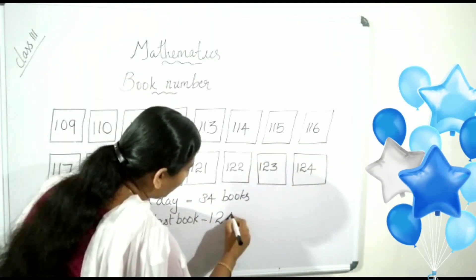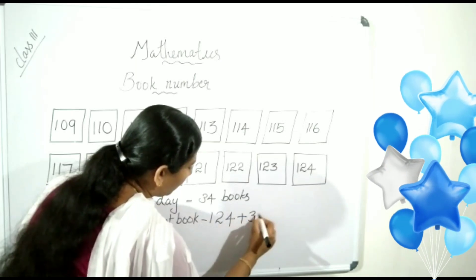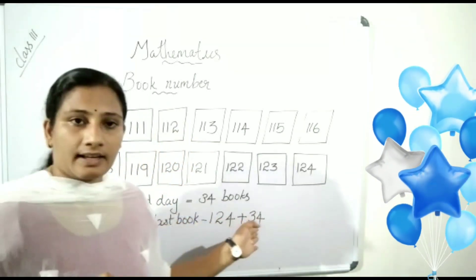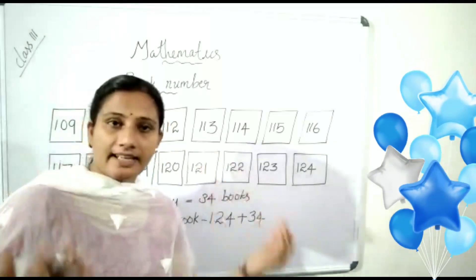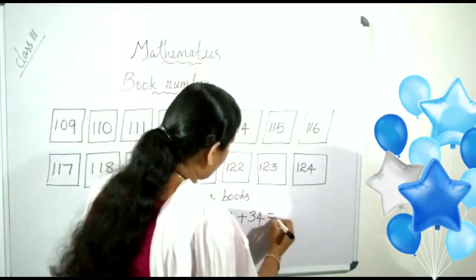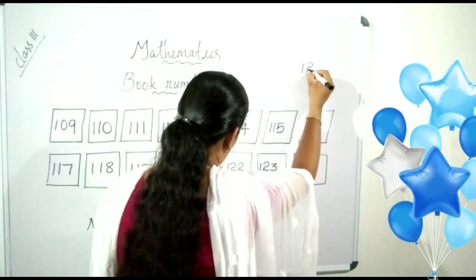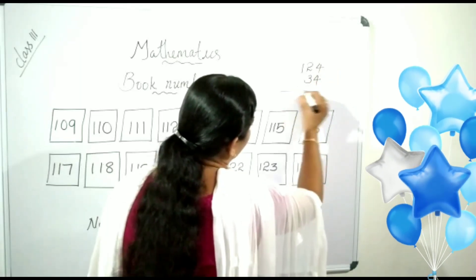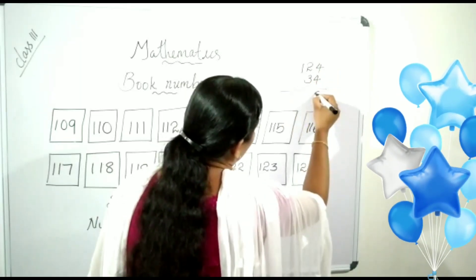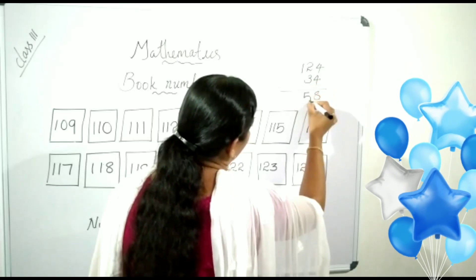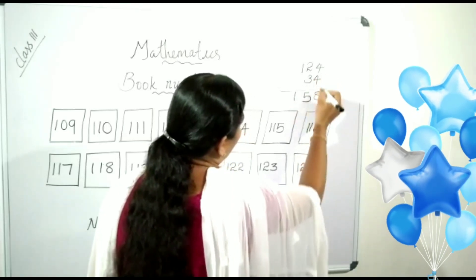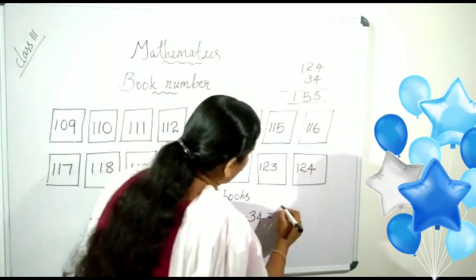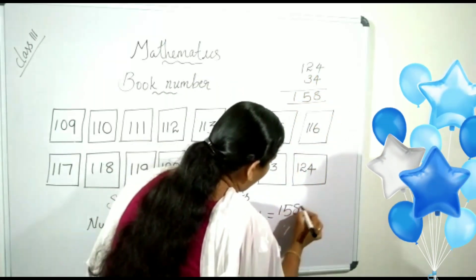So, 124 plus 34. 34 books arranged on the second day. So, what is the answer? 124 plus 34. 4 plus 4 is 8. 3 plus 2 is 5. Then, 1. Yes. 158.